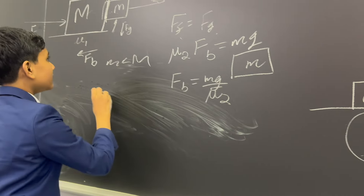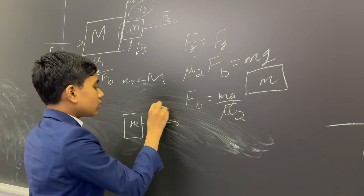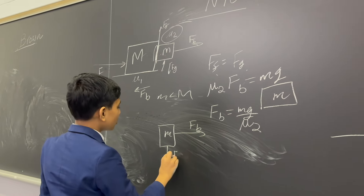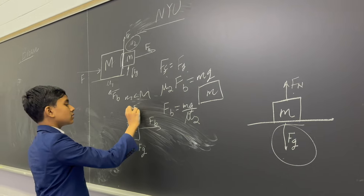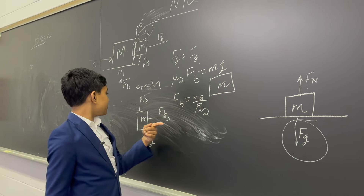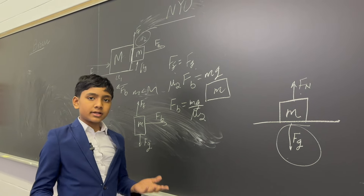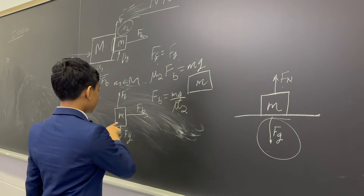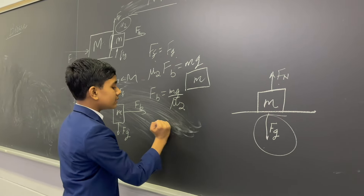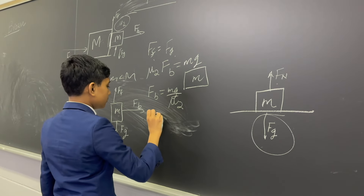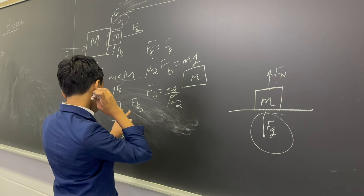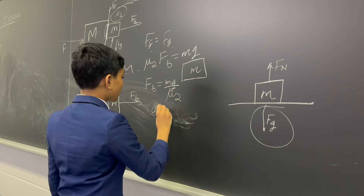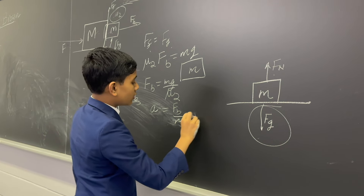So ff equals mu two times fn, and fn here is f-block, and f-block equals mg. So you get f-block equals mg over mu two. You might notice that f-block is actually the only forward horizontal force on m — all the other forces are in the vertical axis. So f-block must be the only source of horizontal acceleration, which from what we can tell is the only kind of acceleration going on, because the mass is supposed to stay at rest vertically.